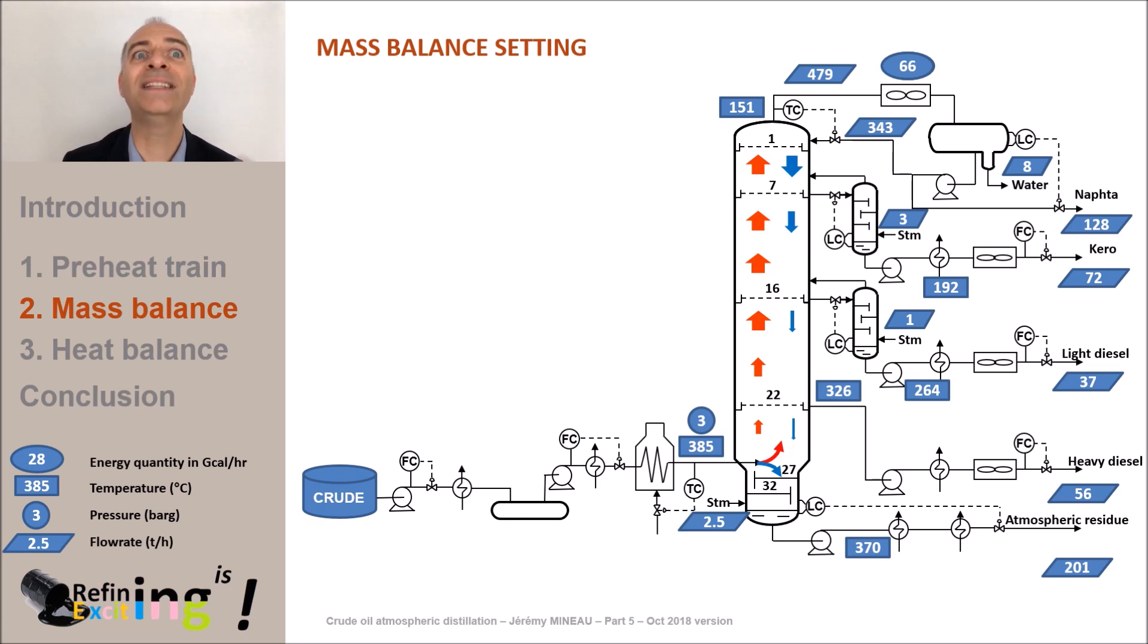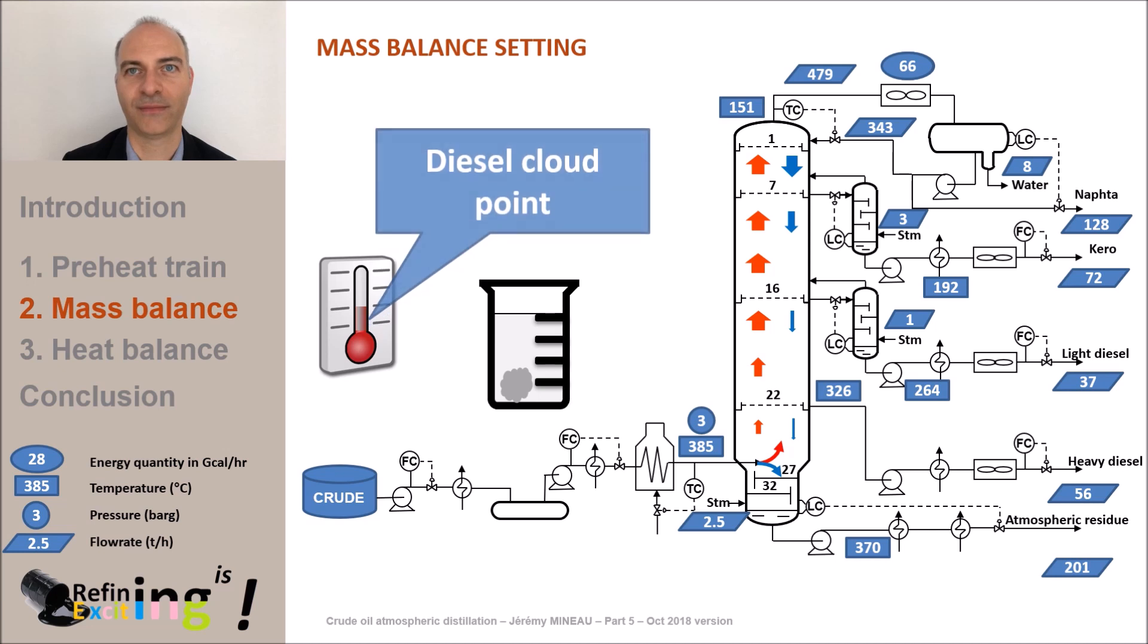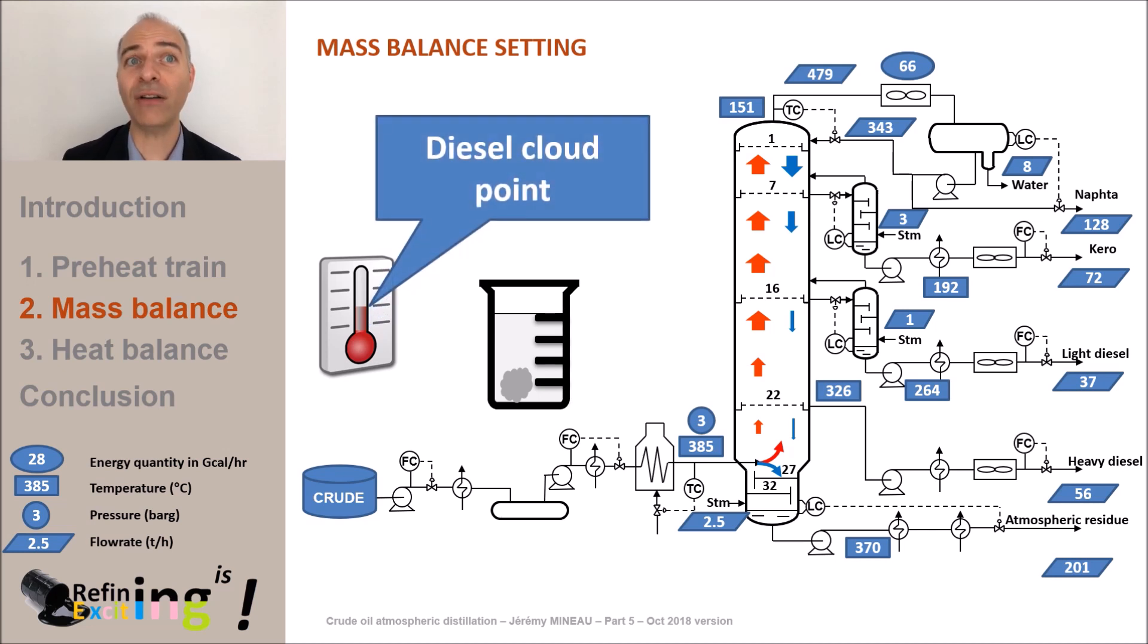This property linked to the behavior of diesel at low temperature is known as the cloud point. This cloud point is the equivalent of the freezing point for the kerosene. The cloud point for a diesel is the temperature at which the diesel starts to be cloudy. But what makes the diesel cloudy? It is the heaviest molecules of the diesel.